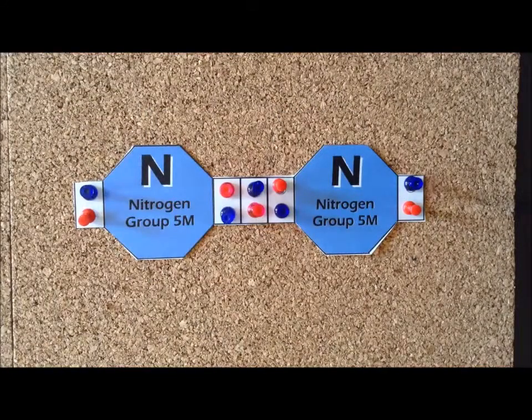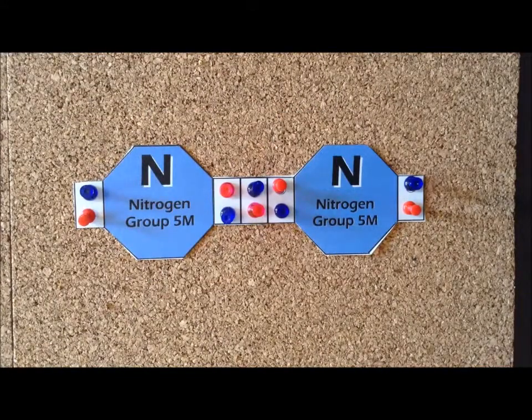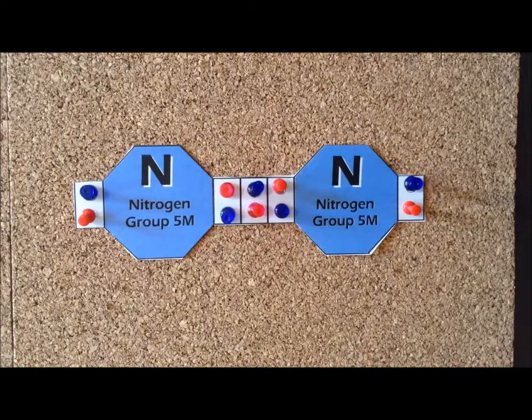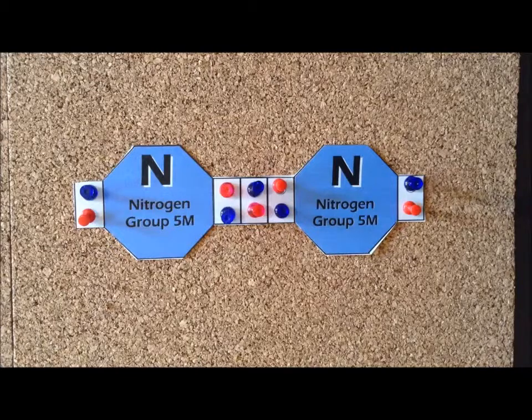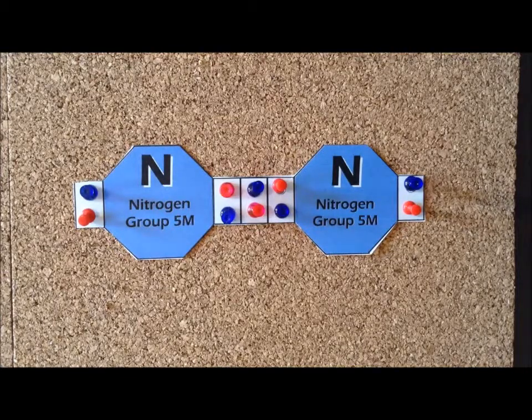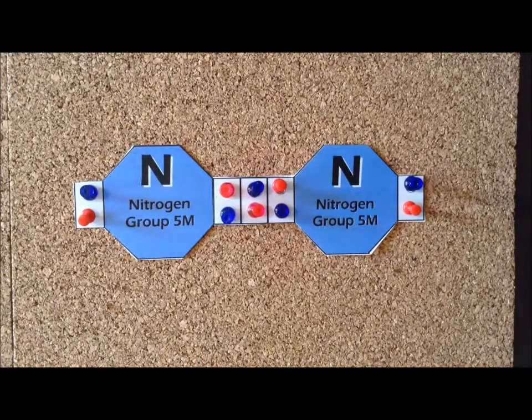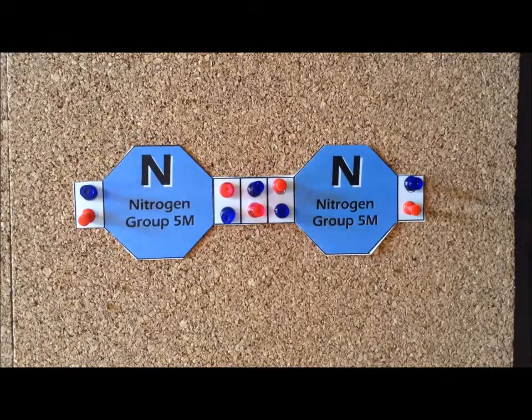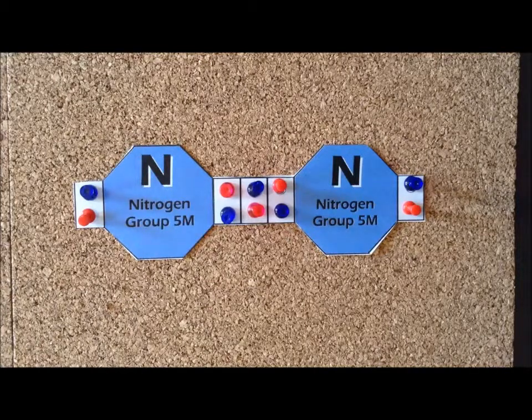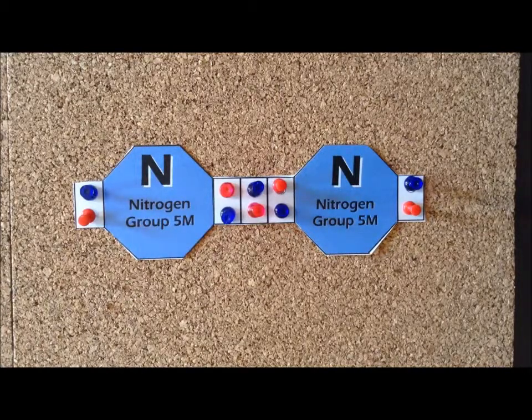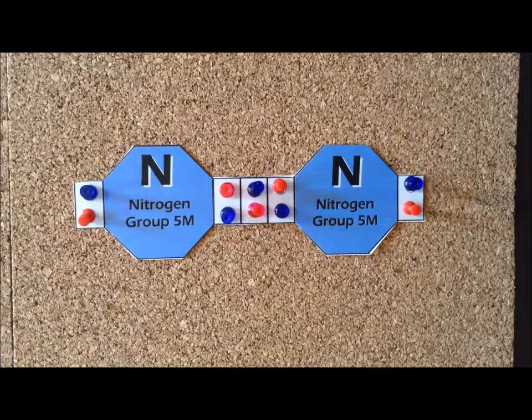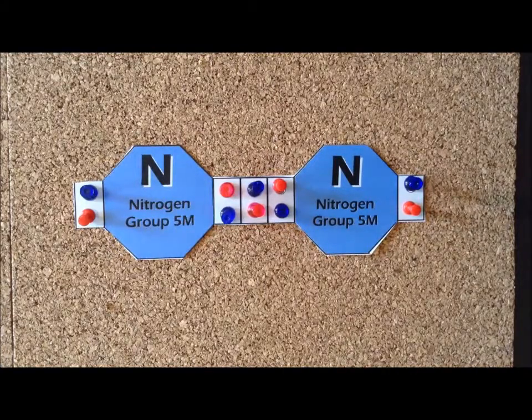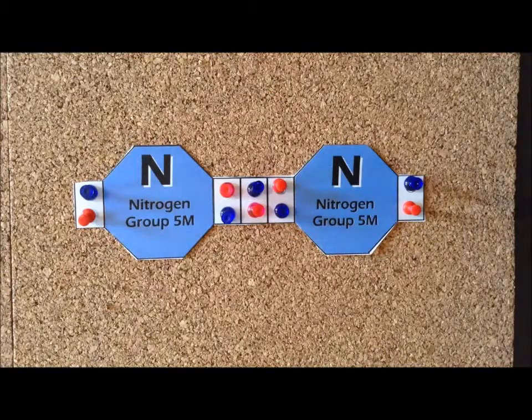The element nitrogen exists as a diatomic gas. Each nitrogen atom contributes five valence electrons. Therefore, for two nitrogen atoms, we have a total of 10 valence electrons. Therefore, we want to allocate our 10 valence electrons in such a way that we satisfy the octet rule for each of the nitrogen atoms. The way that we can do that is to form a nitrogen-nitrogen triple bond.